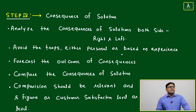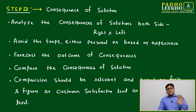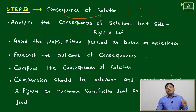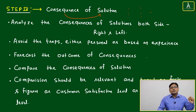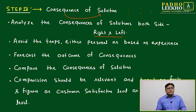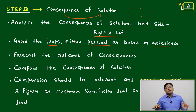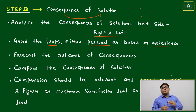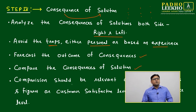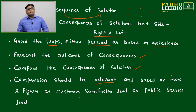Step four: once you have three or four possible solutions, you must list the consequences of every solution — whether small, big, appreciable, or not. Analyze the consequences from both sides: positive and negative. Avoid traps — either personal bias or bias based on experience. Many times personal thinking will contradict business operations. Always be careful. Compare the outcomes and consequences of solutions — comparison should be relevant and based on facts, figures, customer satisfaction levels, or public service levels.